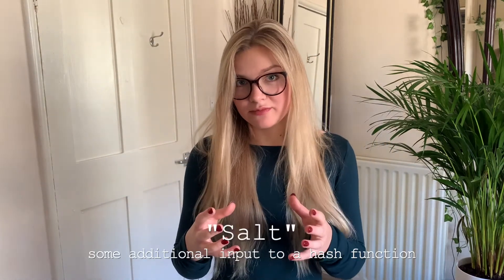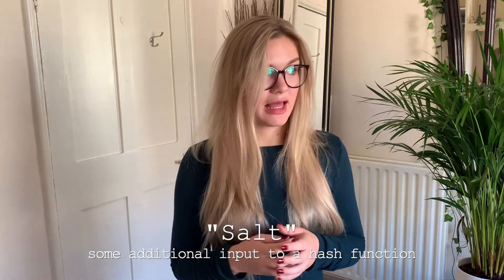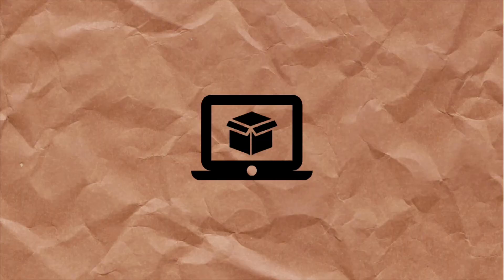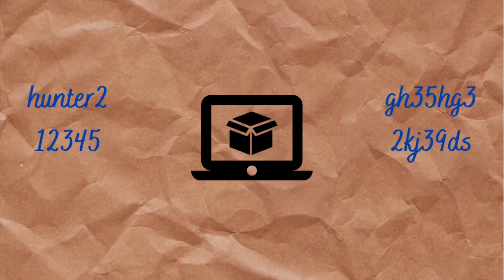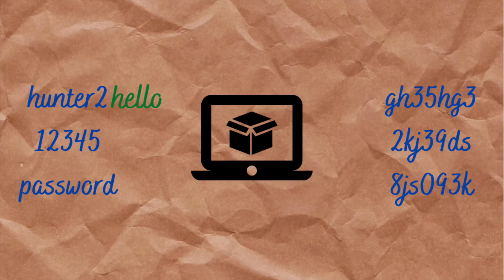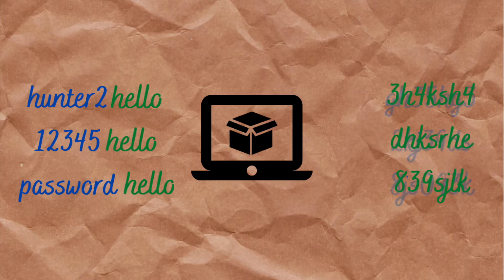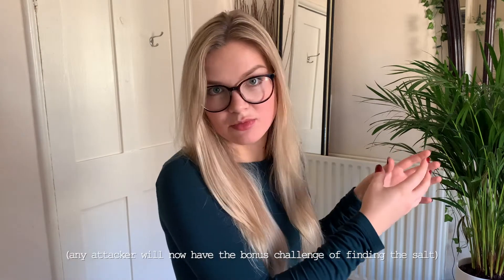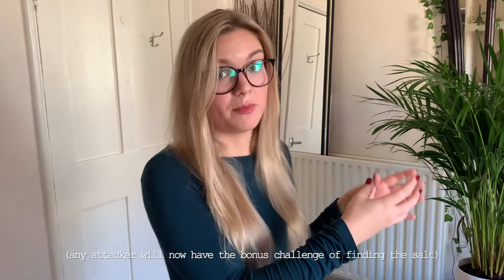As with a lot of things in technology, there are ways to make hashes more secure. The developer who implemented the black box can add a salt — which is another word, like 'hello'. So instead of hashing a password like '12345', 'hunter2', or 'password', you would hash 'hunter2hello', or '12345hello', or 'passwordhello'. That would produce a completely different hash. The password that ends up in the database would not be easily recognizable by someone who has already computed a bunch of hashes for common passwords.